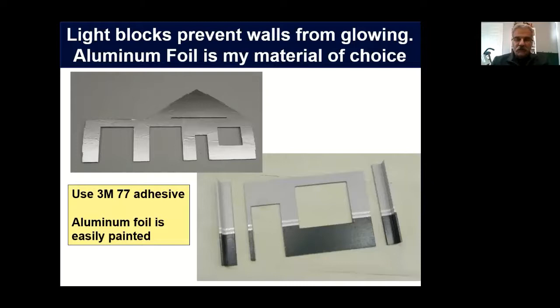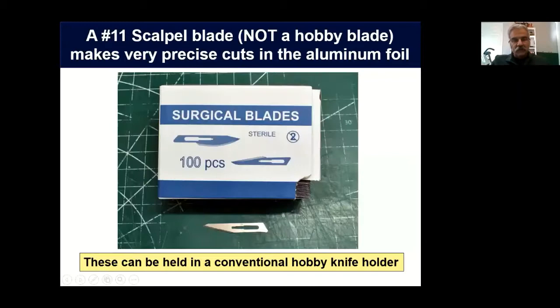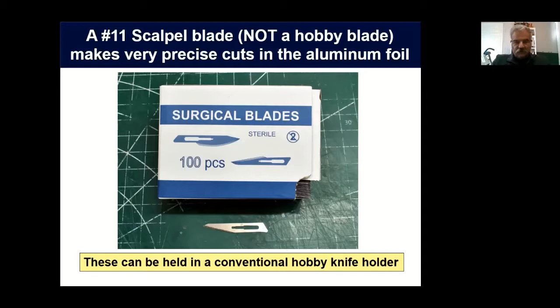There are many articles written about how to prevent your walls from glowing. Aluminum foil is my material of choice by far. It can be made to conform to the inside of the wall, is easily glued on with 3M77 adhesive, and the aluminum can be painted anything you want or have wallpaper stuck to it. A little side tip: if you want to cut aluminum foil or anything precisely, I highly recommend a number 11 scalpel blade — not the standard X-Acto number 11 blade. These scalpel blades are much sharper and thinner, making it very easy to make precise cuts. They can be held in a conventional hobby knife holder and are actually cheaper than number 11 blades — about $8.99 for a pack of a hundred on eBay.